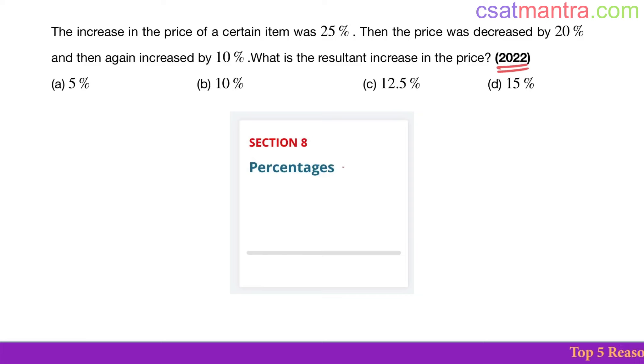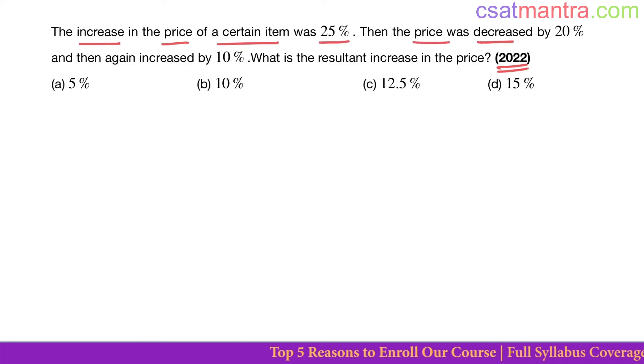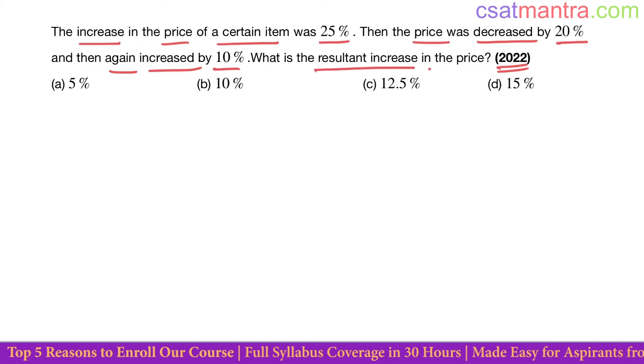2022 question based on percentages. The increase in the price of a certain item was 25%, then the price was decreased by 20%, and then again increased by 10%. What is the resultant increase in the price?